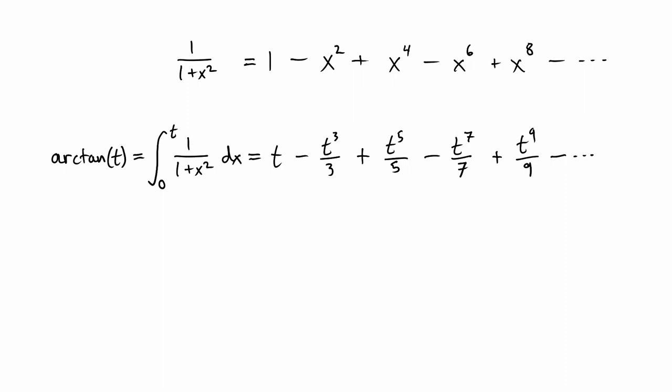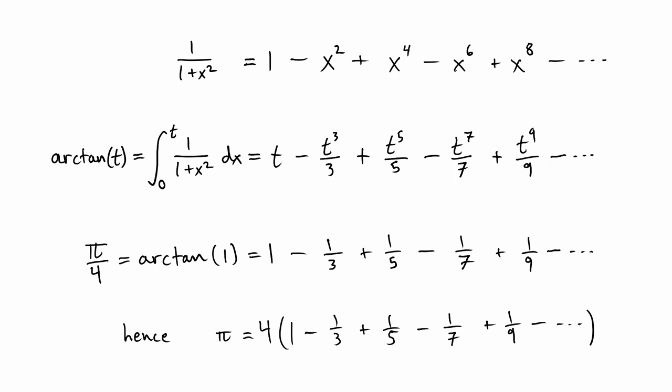The interest here is that the arctangent of 1 is Pi over 4, hence the formula that Pi is 4 times the alternating sum of reciprocals of the positive odd integers. Unfortunately, the Gregory-Leibniz series converges much too slowly to be useful for calculation. Even three decimal places needs 2,000 terms.